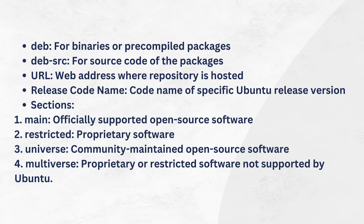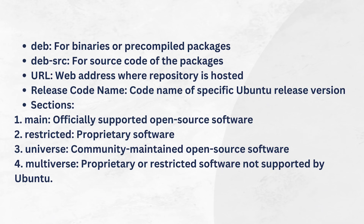Debian source repositories contain the source code of the packages, which are useful for developers. The URL is the web address where the repository is hosted. The release code name represents the code name of the specific Ubuntu release version, such as 'jammy' for Ubuntu 22.04.2 LTS.